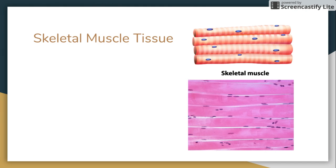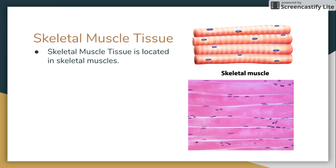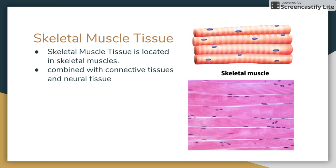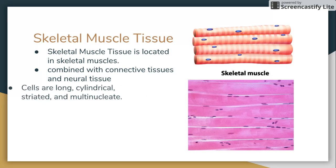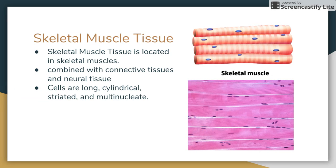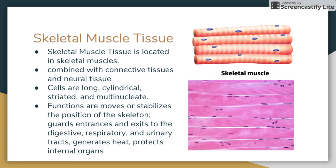Skeletal muscle tissue is located in skeletal muscles, combined with connective tissues and neural tissue. The cells are long, cylindrical, striated, and multi-nucleate. Its functions are to move and stabilize the position of the skeleton, and to guard entrances and exits to the digestive tract.